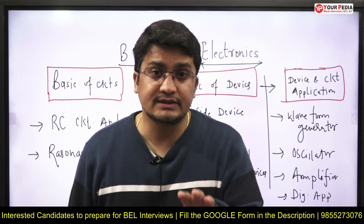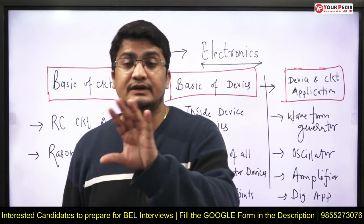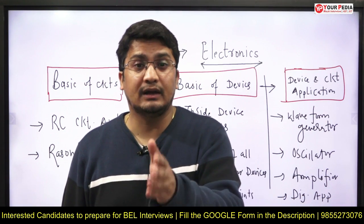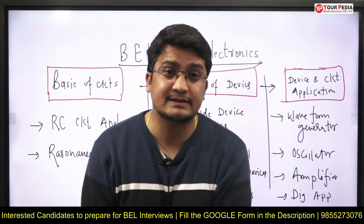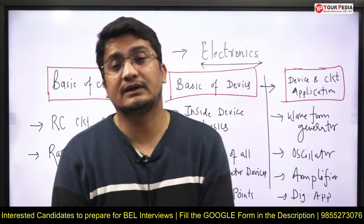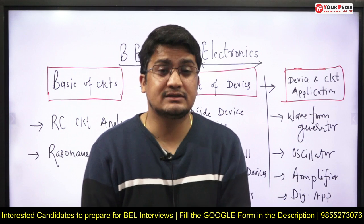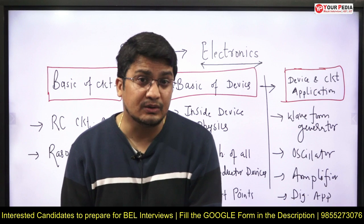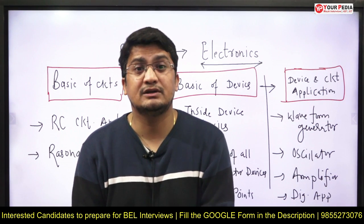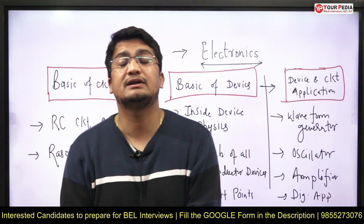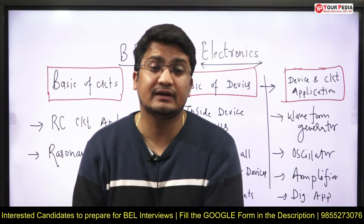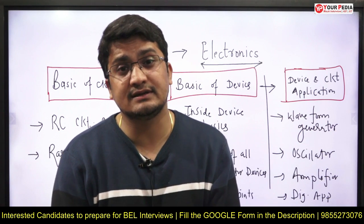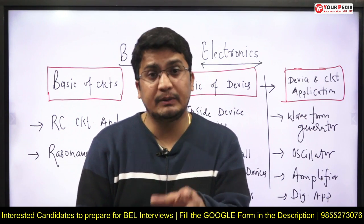Focus on RC circuits — how charging and discharging happen, what is the time constant, and be ready to draw the waveform of voltage and current for different RC circuits with different combinations of capacitors and resistors, and with different sources of excitation: step, ramp, and impulse. Capacitor does not allow sudden change of voltage. If capacitor does not allow sudden change of voltage, you must understand its practical significance. Does it allow sudden change of charge? No. It may allow sudden change of current under specific conditions — that is the impulse excitation.